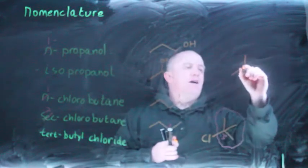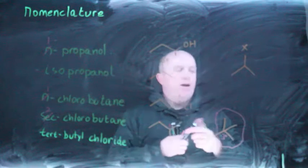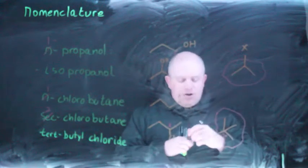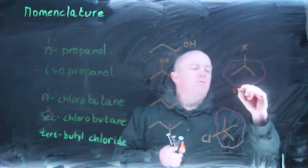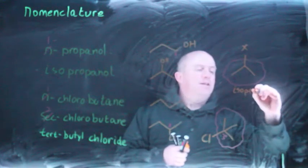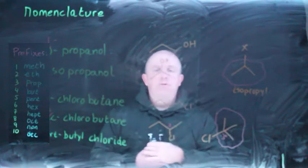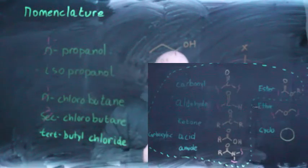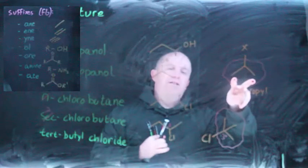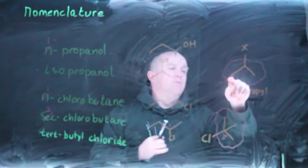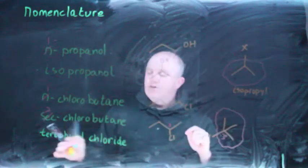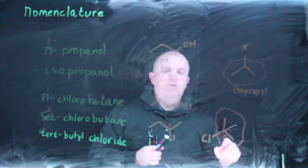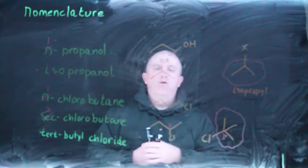The 'iso' prefix can be generalized: it refers to a branched Y-shaped arrangement at the end of a chain. An isopropyl group specifically is a three-carbon chain where you're binding through the middle carbon. A tert-butyl group is a four-carbon unit where the point of attachment is a carbon bonded to three other methyl groups. Memorize the prefixes, the functional groups, and these special group names — then you're ready to work on IUPAC naming.